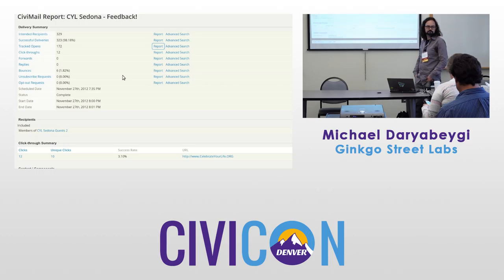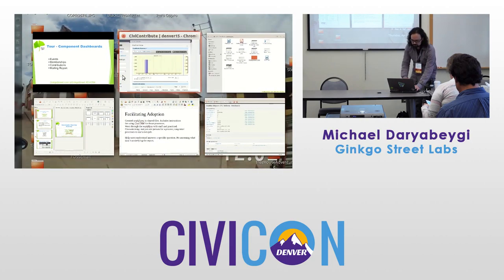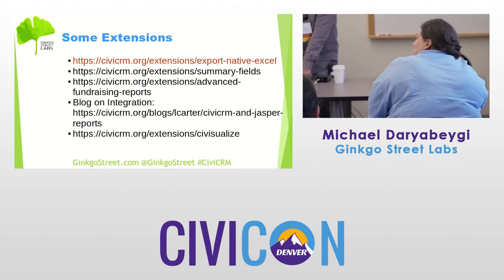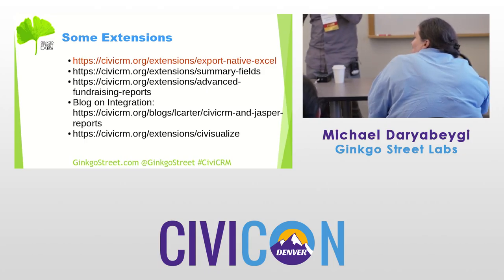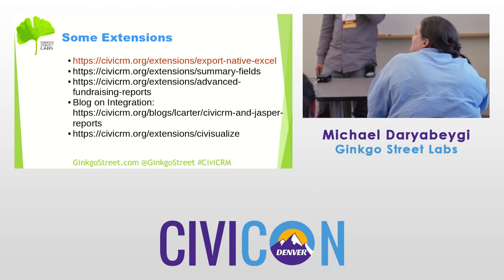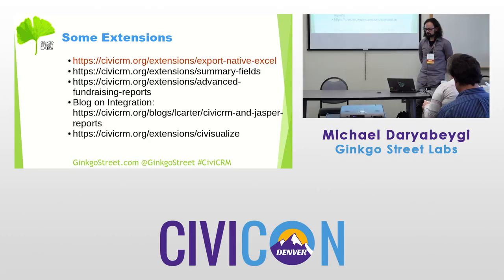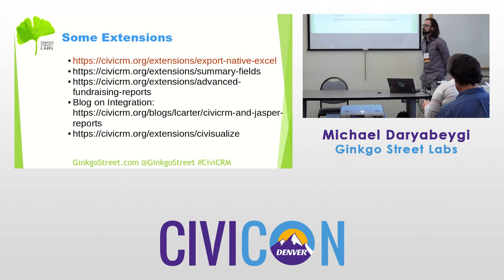When auto-emailing reports, it sends a PDF and also a link you can click on — but the link is a real-time link, so it will show data as it is now, which might not be the same as when it was sent. The link used to be very difficult to suppress, so if you're sending it to somebody who doesn't have access to Civi, that link will cause a lot of confusion.